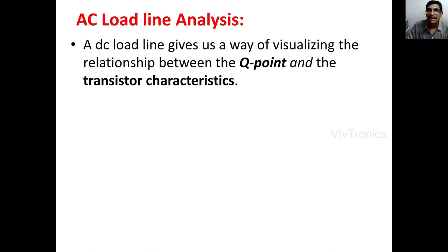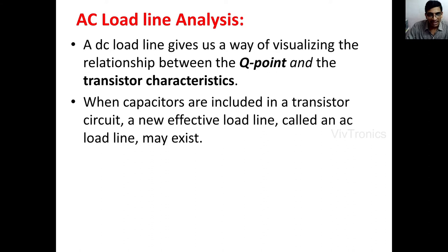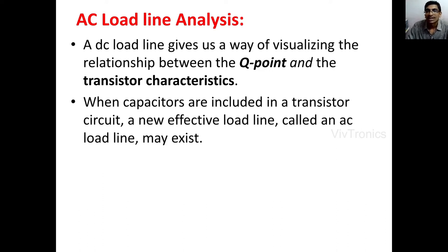If we are introducing capacitors in our CE amplifier circuit — like the coupling capacitor, bypass capacitor, or load capacitor — a new effective load line will exist on the output characteristics. That is called the AC load line. The AC load line analysis applies for AC input signals when the circuit contains capacitors, meaning we are using that circuit for AC amplification.